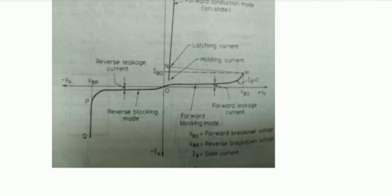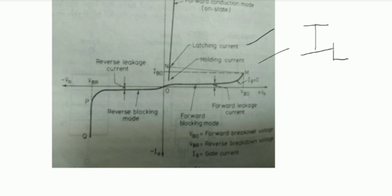In the forward conduction mode, two important currents are latching current and holding current. Latching current is defined as the minimum value of the anode current which must be attained during the turn-ON process to maintain conduction when the gate signal is removed. It is the minimum current needed to keep the thyristor ON after triggering.